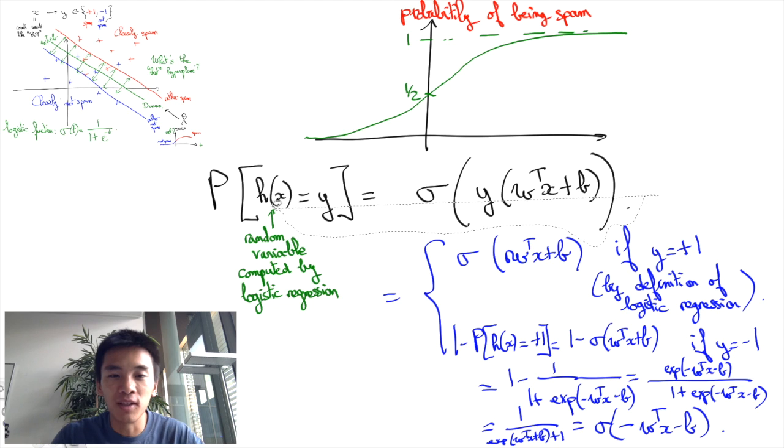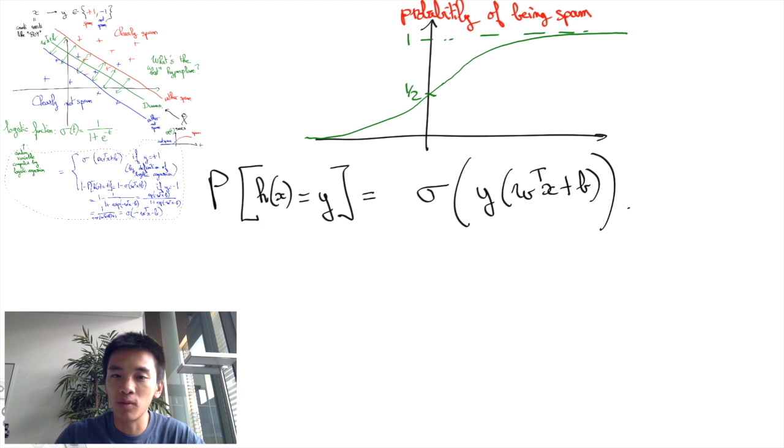Thus, intuitively, what we want to do when we choose the values of w and b is to maximize the quantity sigma of y times w transpose x plus b.